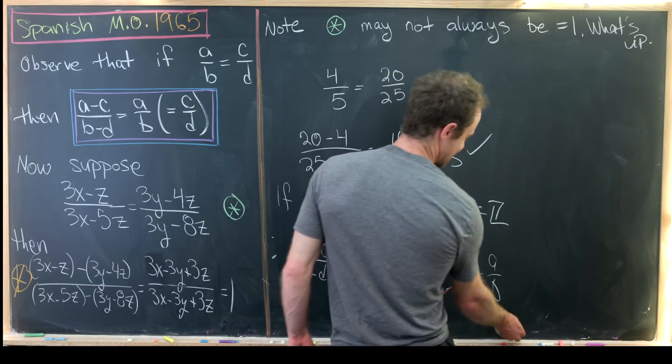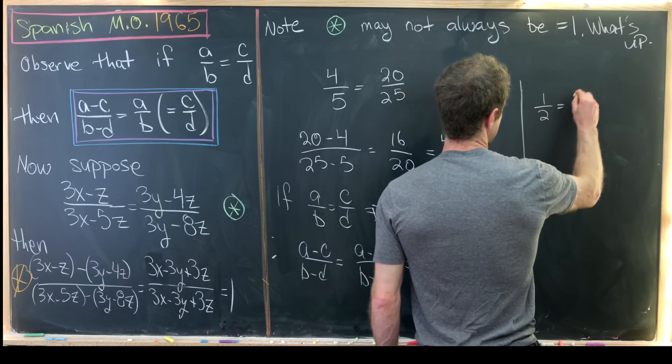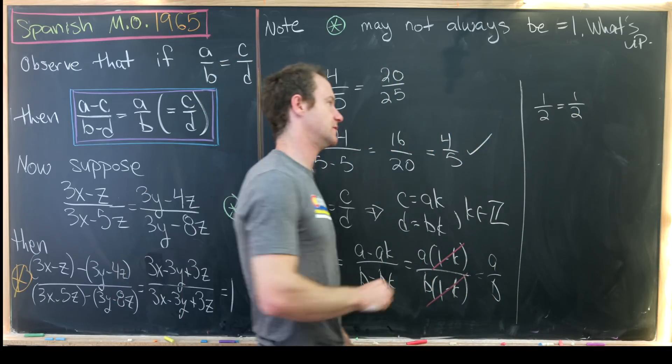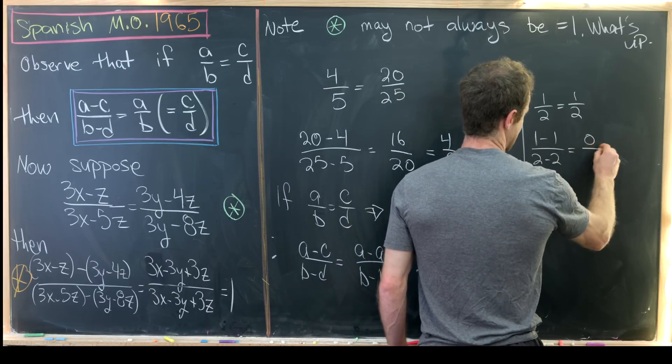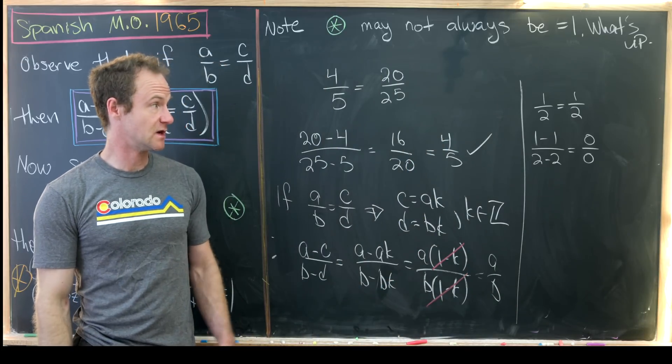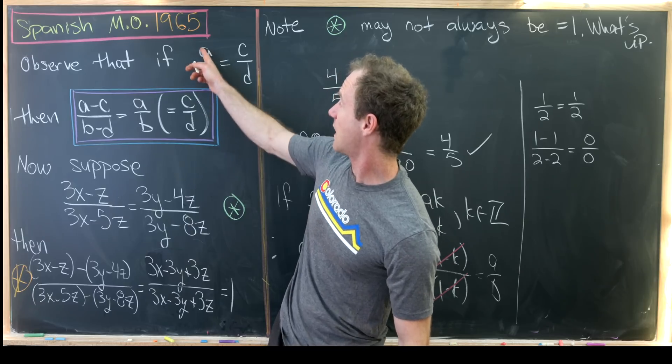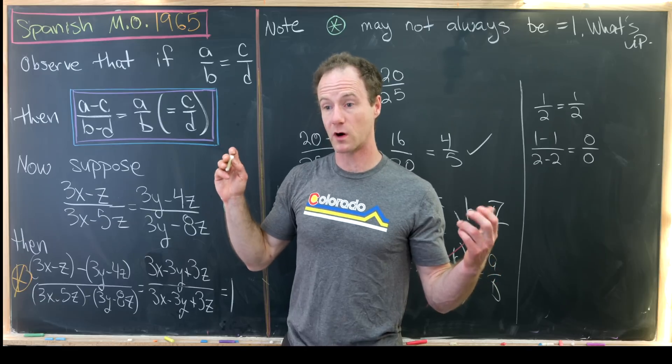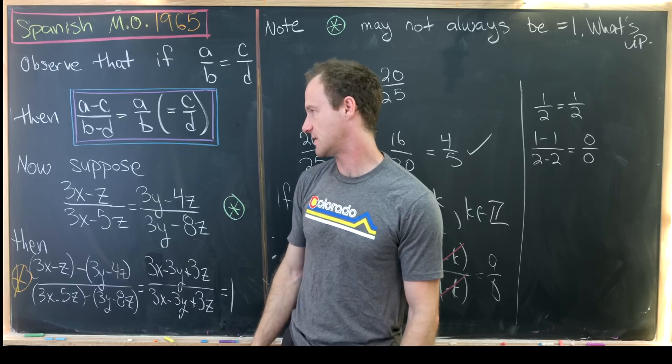So a quick example of that happening, maybe the simplest example, is if we take 1 half equals 1 half. So that's clearly true. And now we take 1 minus 1 over 2 minus 2. That's the same thing as 0 over 0, which doesn't make any sense. So this phenomenon seems to work unless these two fractions are kind of more equal than equal. In other words, the numerators are the same and the denominators are the same.